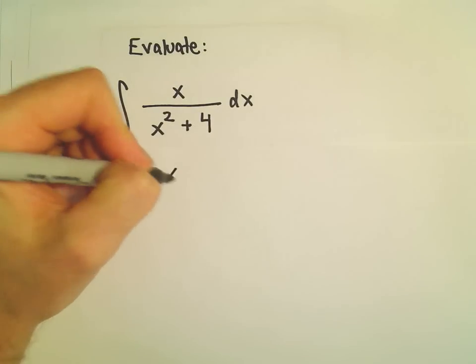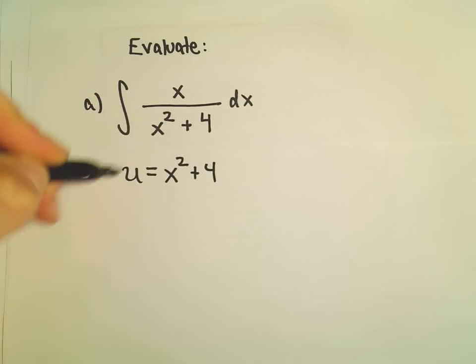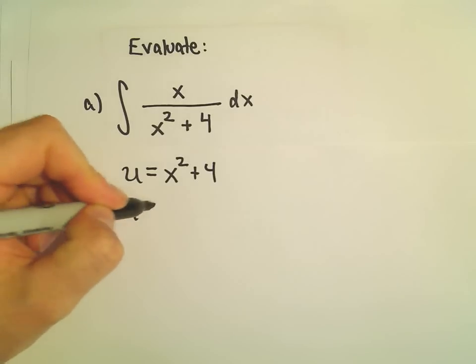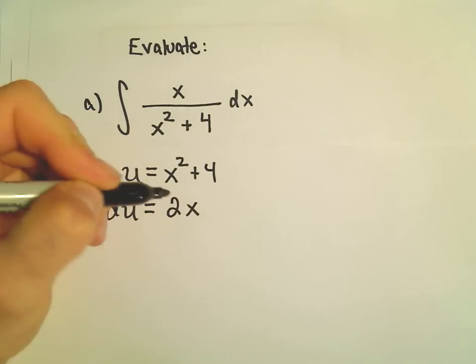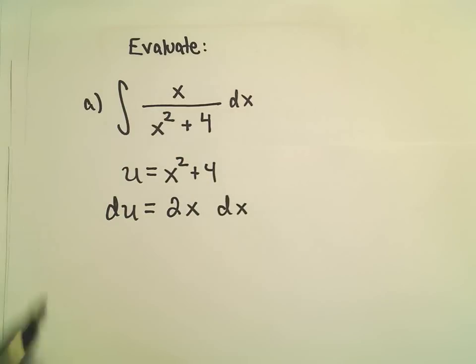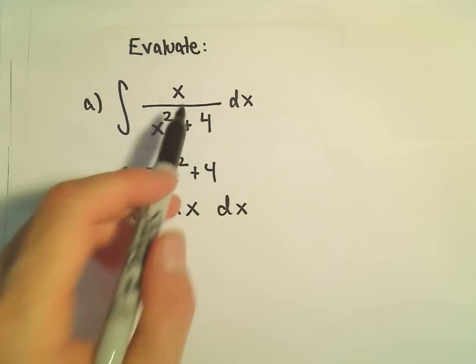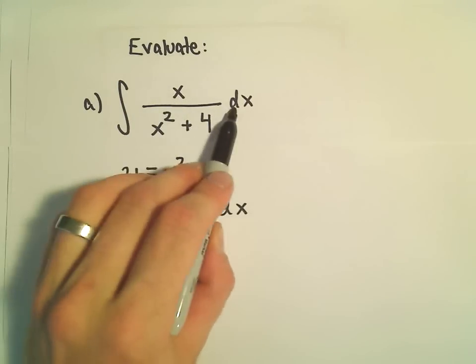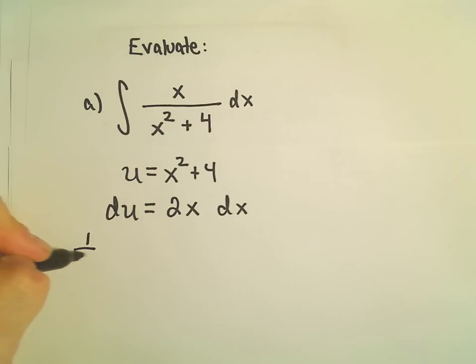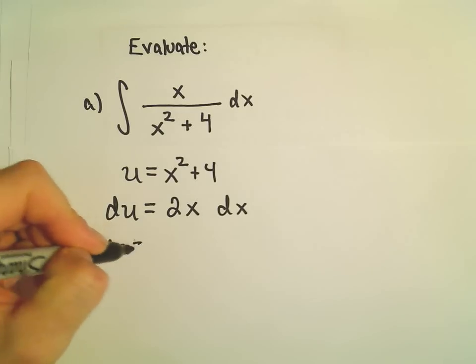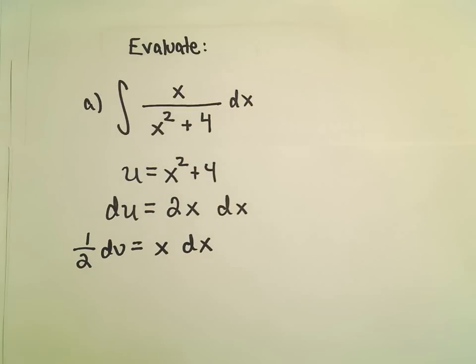So if we let u equal x squared plus 4, the derivative of x squared is just going to be 2x and then we'll tack on our dx. Well, notice we have an x dx in our problem. So I'm just going to multiply both sides by 1 half. So we'll have 1 half du equals x dx.